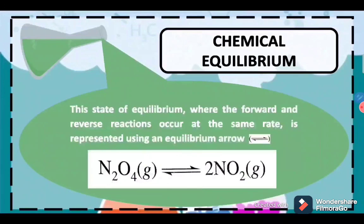This state of equilibrium — where the forward and reverse reactions occur at the same rate — is represented using an equilibrium arrow. The arrow denotes the idea that the chemical reaction has already reached equilibrium, hence this type of chemical reaction is a reversible chemical reaction.